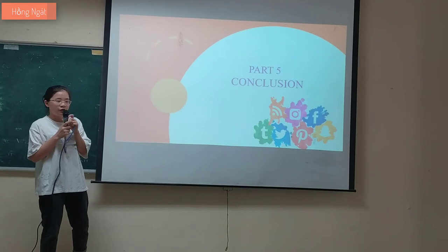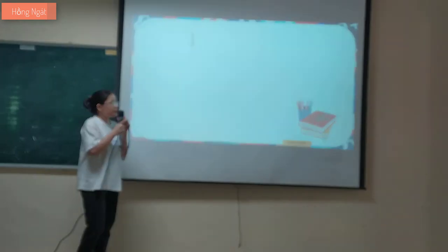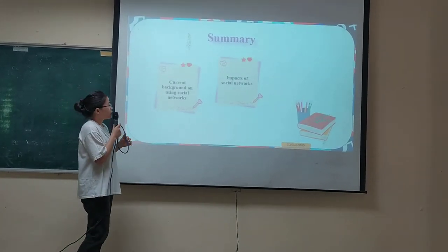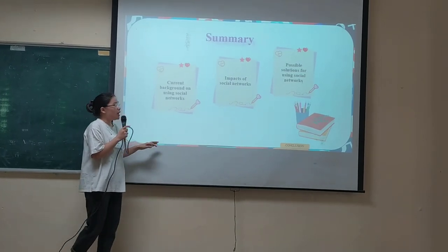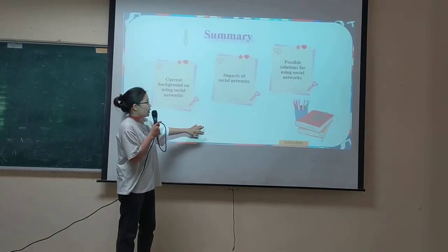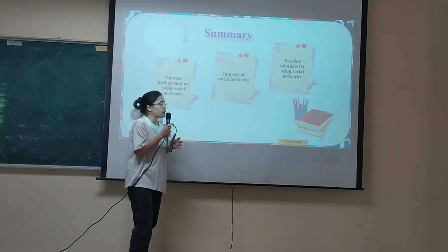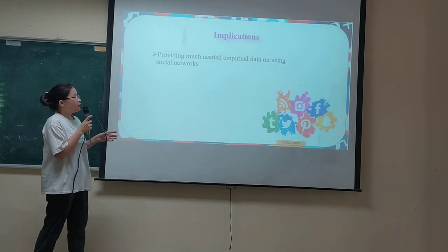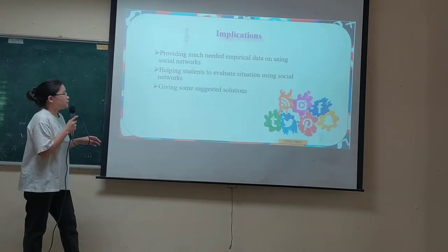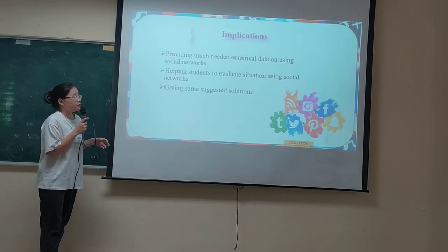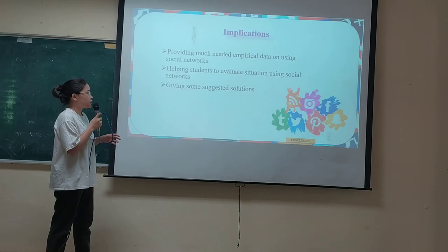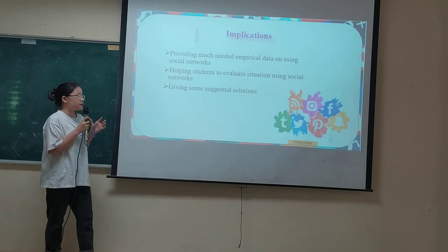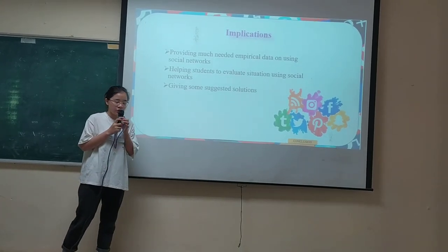Now I will present part 5, the conclusion. In summary, we have three main areas covered in our study: the current background of social network use, the impact of social networks, and possible solutions for Banking Academy students. Our study has several implications: it provides useful data on social network use among students, helps students evaluate their own social network behavior, and offers practical solutions for young students.